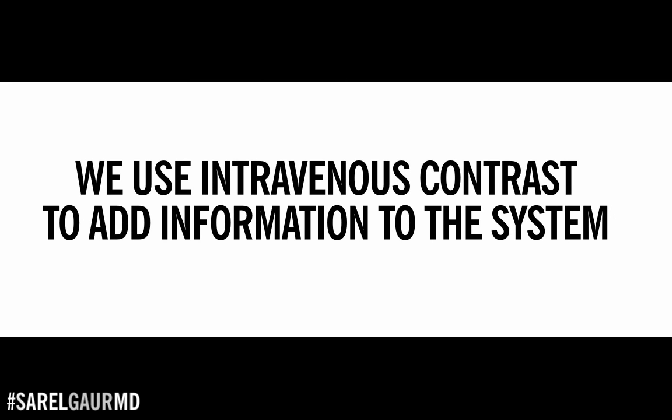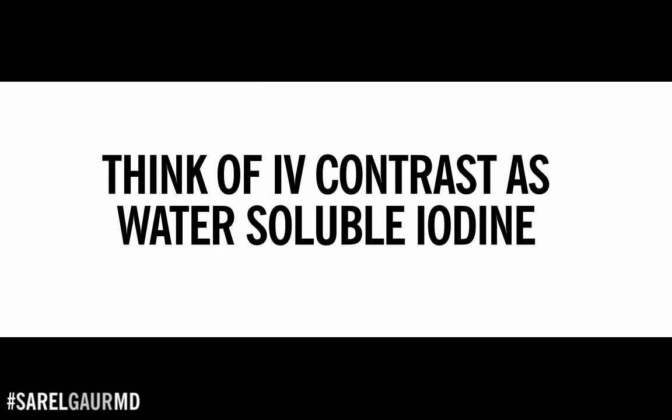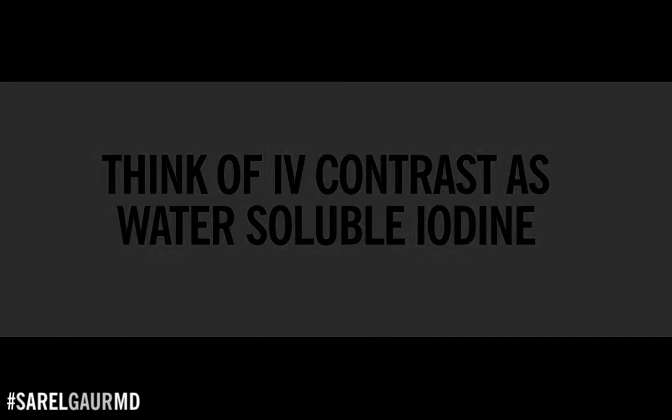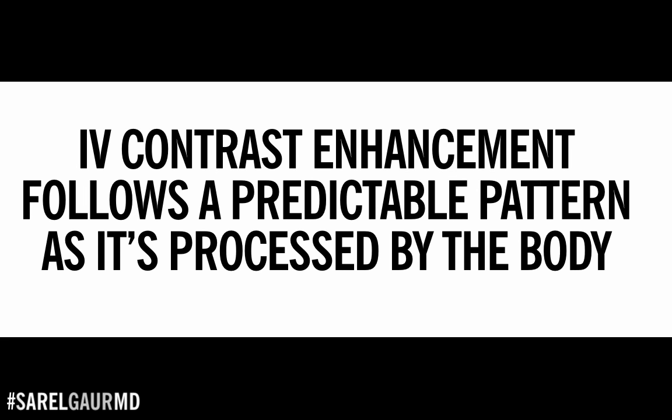In summary, we use intravenous contrast to add information to a CT examination. It is useful to think of IV contrast as a water-soluble preparation of iodine that alters the density — because that is what it is. IV contrast enhancement follows a very predictable pattern as it flows throughout the body, and by performing our CT at different time intervals, we get to see these different phases of IV contrast enhancement.